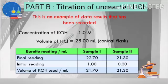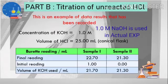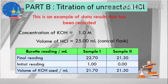This is an example of the data result that has been recorded. I use KOH to replace the NaOH we used before, but the concentration remains 1.0 molar. The volume of HCl that we use is 25 mL. For sample one, the initial reading is 1.0 mL and the final reading is 22.7 mL, so the volume of KOH used is 21.7 mL. For sample two, the initial reading is 0.00 and final reading is 21.30, so the volume of KOH used is 21.3 mL.